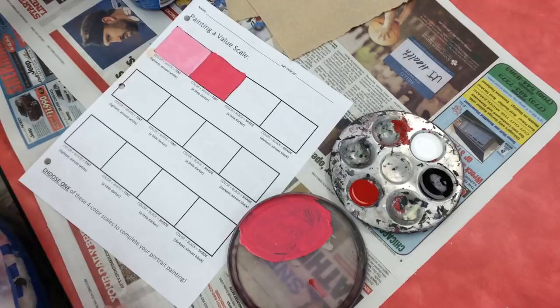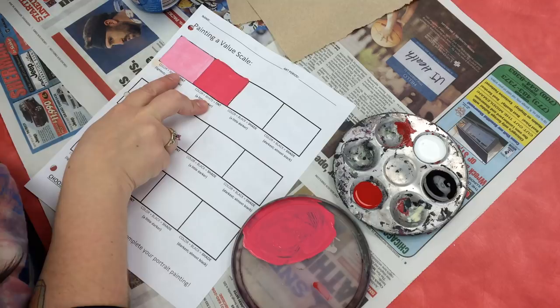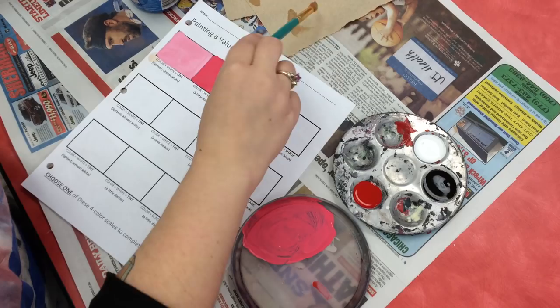Now I'm going to wash my brush out completely, because I'm about to switch colors. These two colors are tints, which means they're color plus white. My next two squares are going to be shades, which means color plus black.